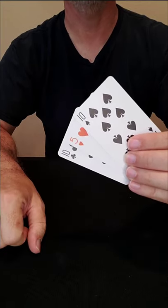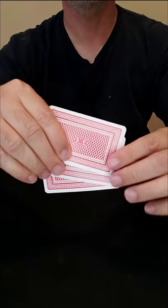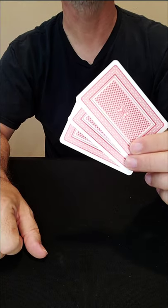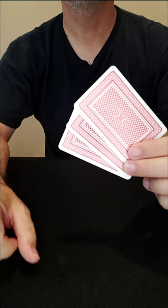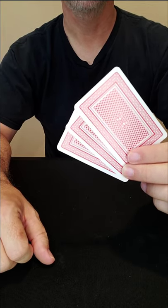So you have your ten of clubs, five of hearts, and ten of spades, and you can see all three cards from the back as well. And of course the trick is to follow the red card. Where is the five of hearts?